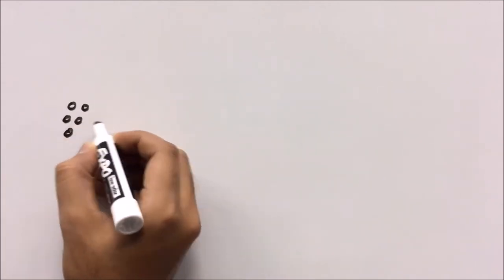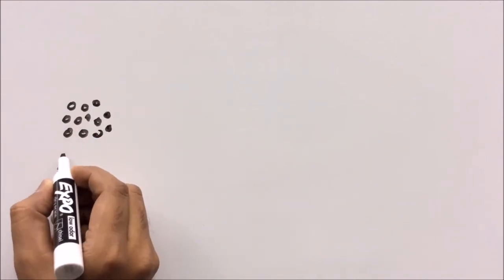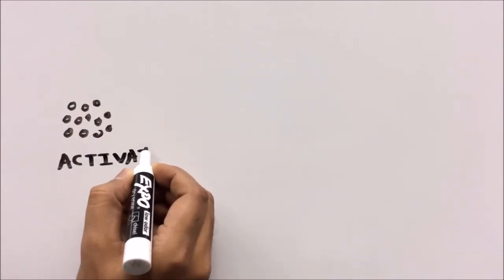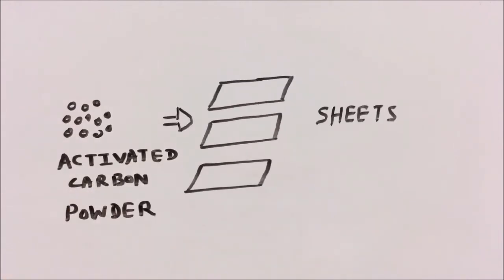Alternatively, a new method which is grabbing industrial attention is to use abundantly available porous activated carbon and a small amount of electrical energy. The activated carbon, which is available in powdered form, is first converted into sheets and assembled into pairs, leaving some space in between for water to flow.